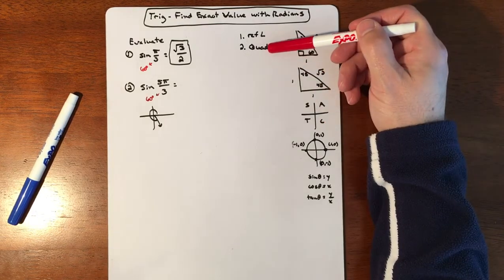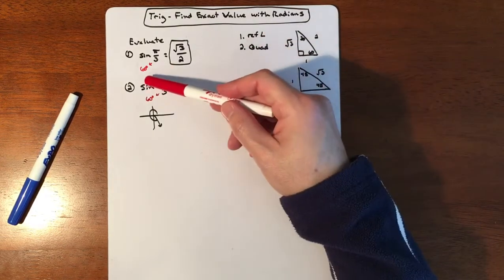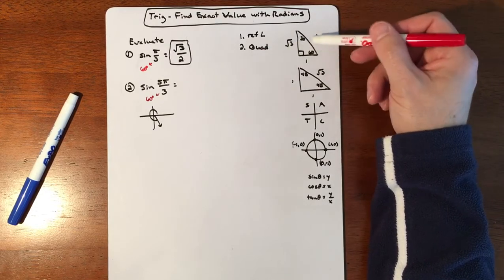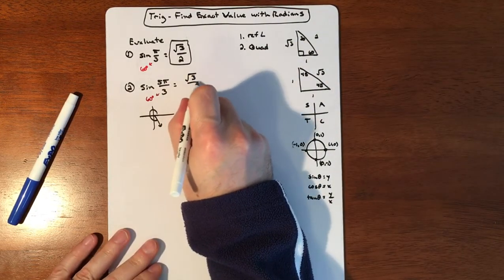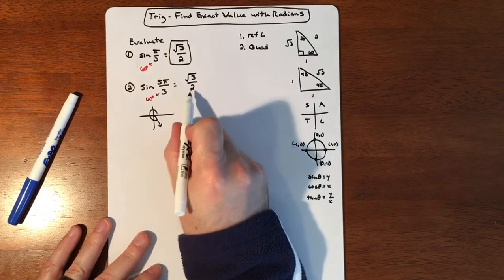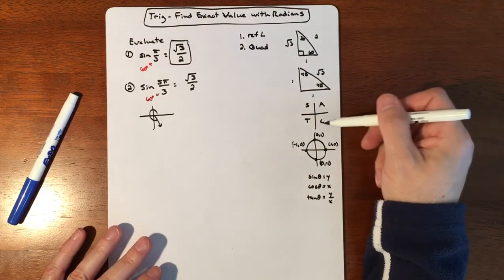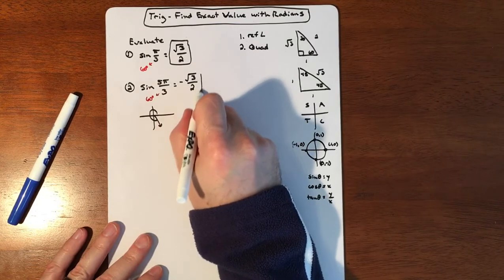So I know my quadrant. I know my reference angle. I'm really doing sine of 60. So sine of 60 is root 3 over 2. So it's the same root 3 over 2 because the reference angle is the same. The only difference is we're in the fourth quadrant. So my answer is going to be negative.